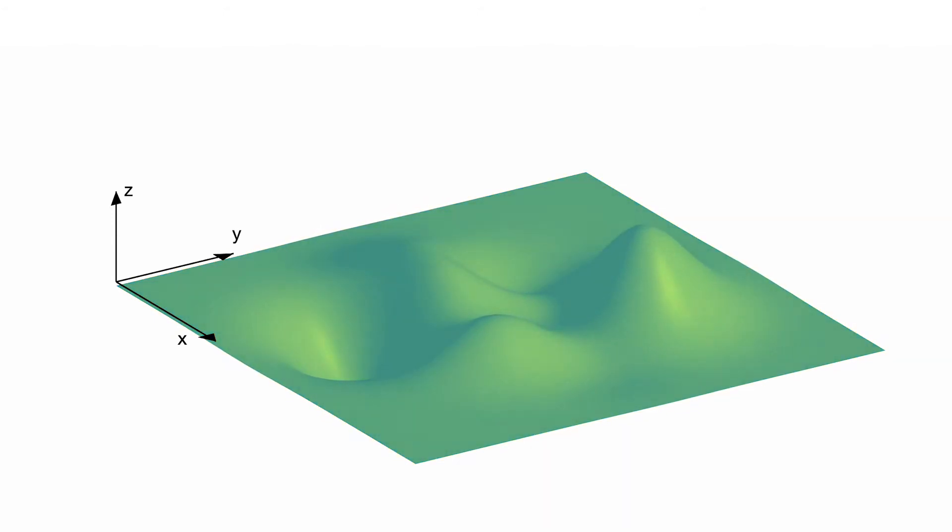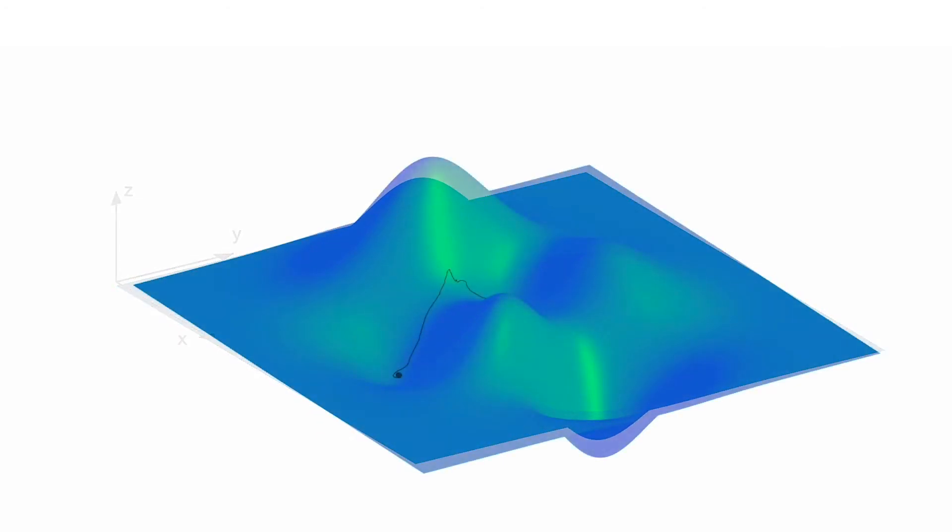In principle, we can come up with an infinite number of possibilities of how the brain can make decisions. Maybe it goes through a sequence of small little jumps until it reaches the final conclusion. So how can we not confine ourselves to two specific possibilities we come up with a priori, but how can we explore the space of all possible models which can explain the data from the brain?